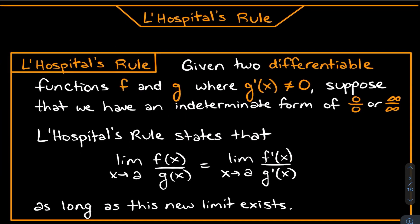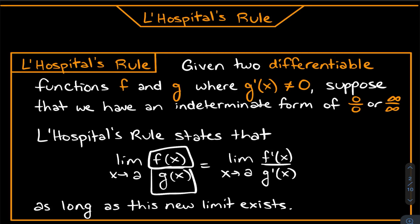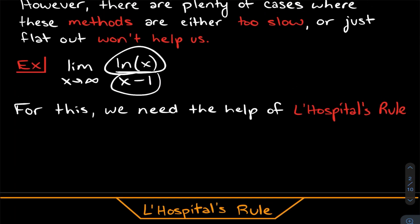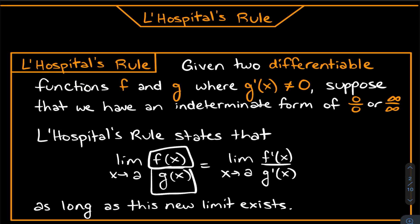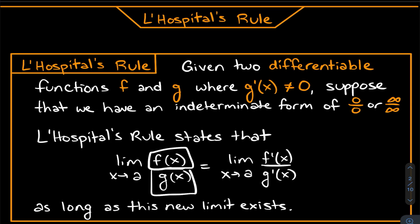L'Hôpital's rule says that if we have a zero over zero or infinity over infinity case, we call the numerator f(x) and the denominator g(x). So ln(x) is f(x) and (x − 1) is g(x). What this limit equals is actually the derivative of the top separately divided by the derivative of the bottom separately — not the quotient rule. You take those derivatives separately.